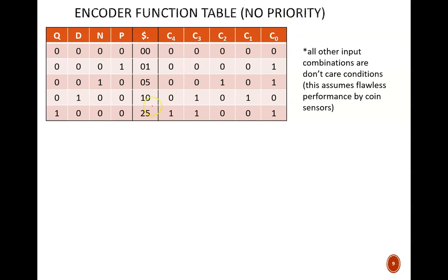An abbreviated function table for the encoder is shown here. I call it abbreviated because there are four inputs, one for each coin type, which should yield 16 rows. But we only see five rows. The assumption here is that only one coin input will be active at one time.